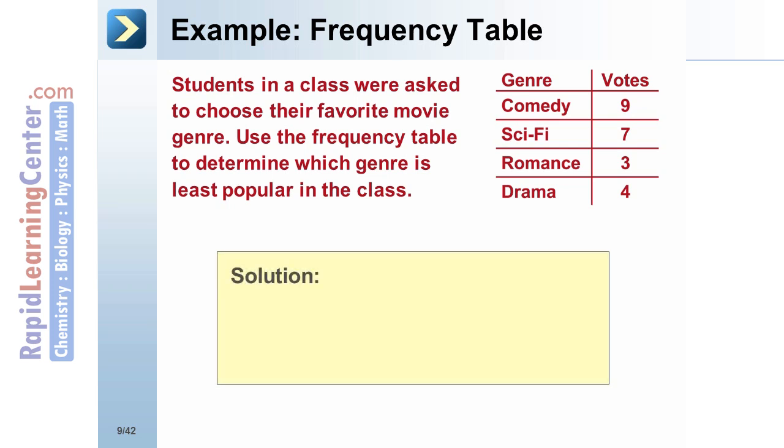Solution: The frequency table shows that comedy received 9 votes, science fiction received 7 votes, romance received 3 votes, and drama received 4 votes. The least popular genre is the one with the least votes. Therefore, romance movies are least popular in the class.